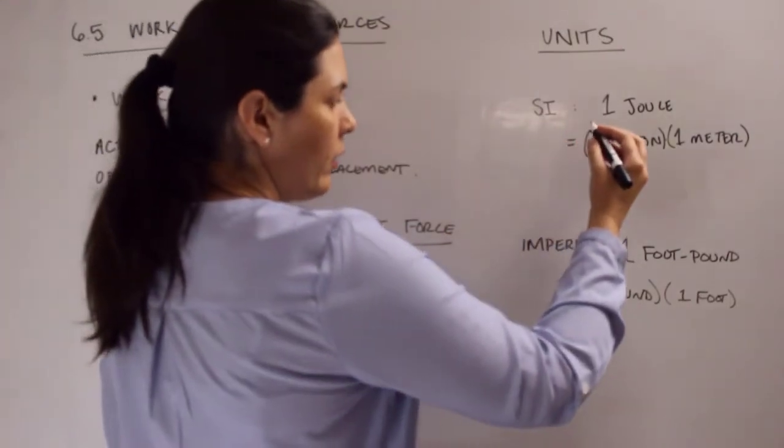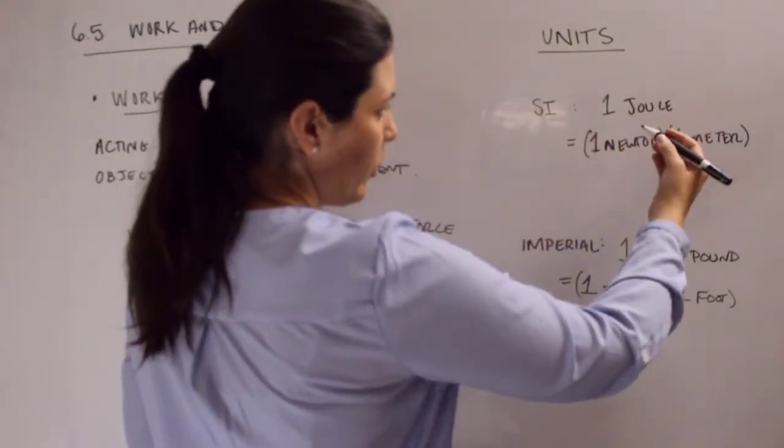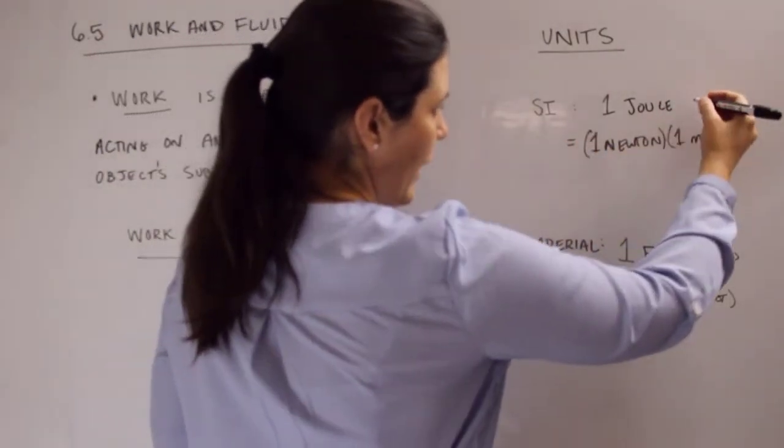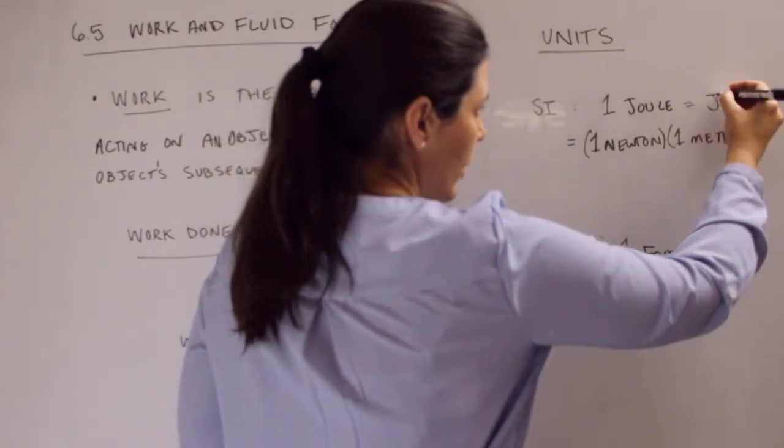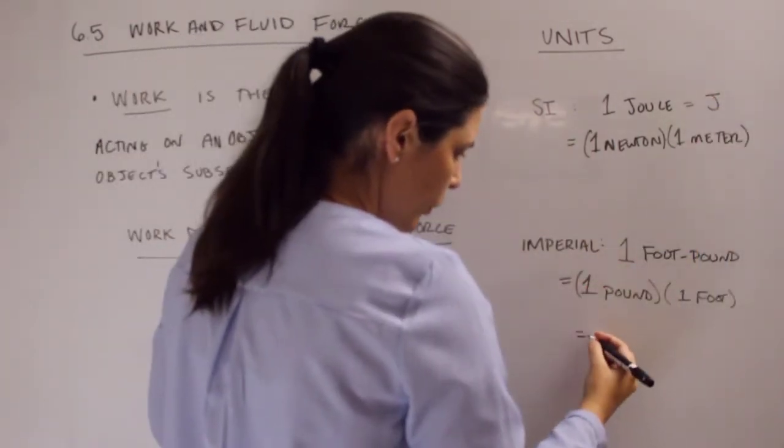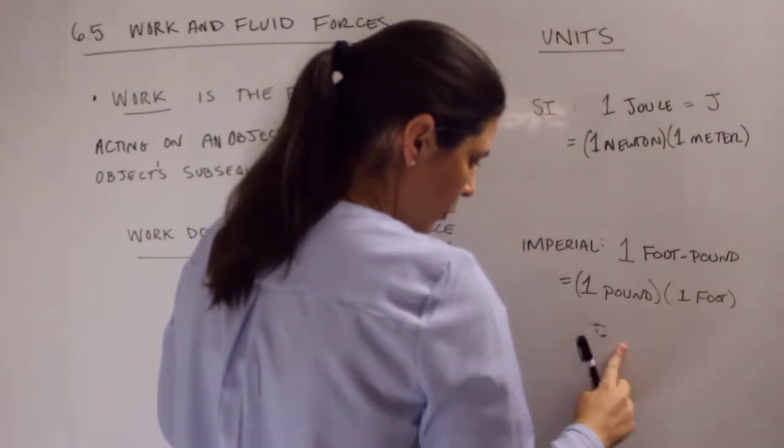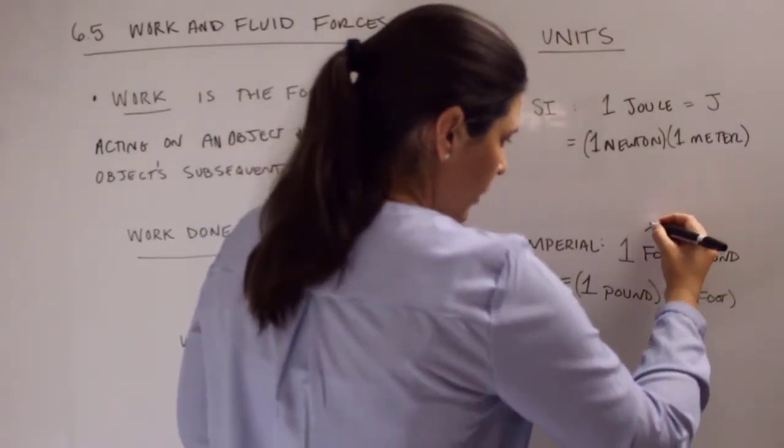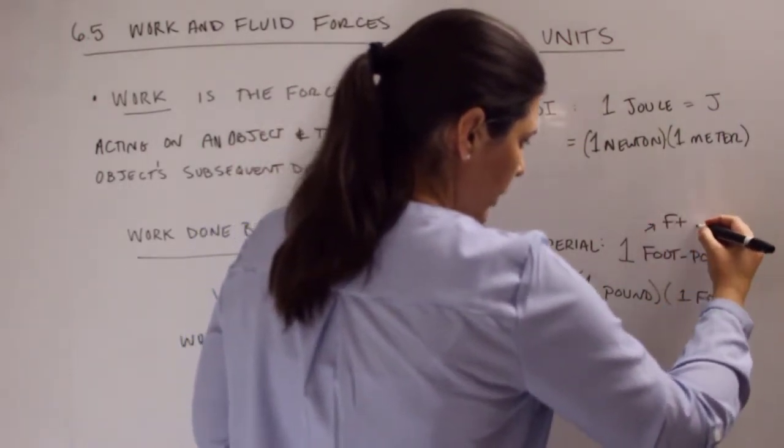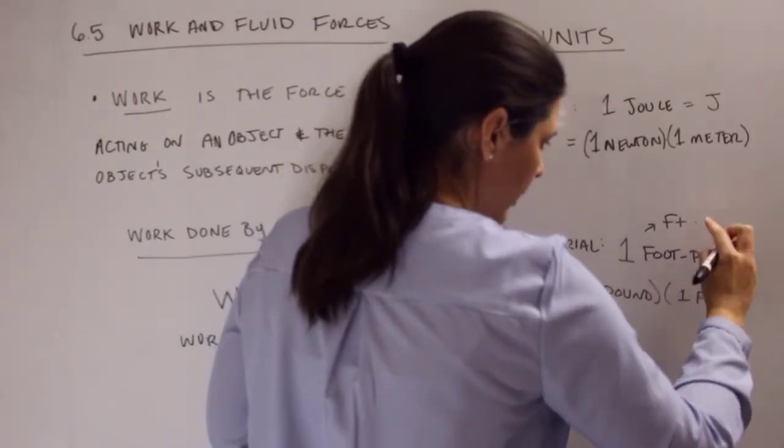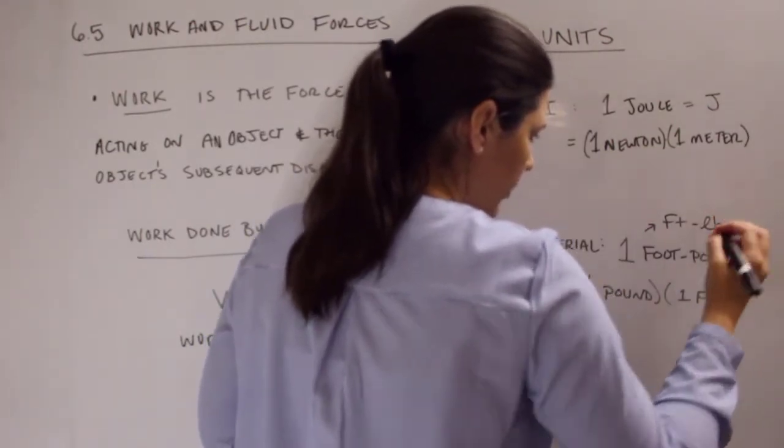Real quick, the variables for joule, it's straightforward, it's just J. So J for joule. And then foot pound, we can abbreviate it. Foot pound is just F-T-L-B.